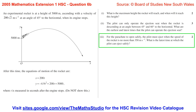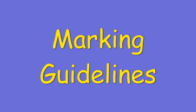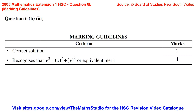Part 3. For the parachute to open safely, the pilot must eject when the speed of the rocket is no more than 350 metres per second. What is the latest time at which the pilot can eject safely? The marking guidelines: for one mark, recognises that v squared equals x dot squared plus y dot squared, or equivalent merit; for two marks, correct solution.